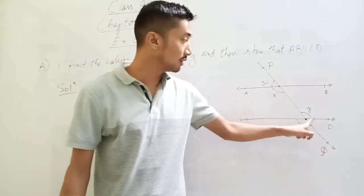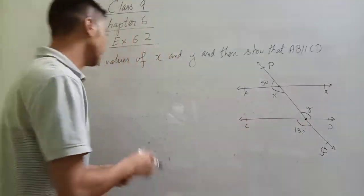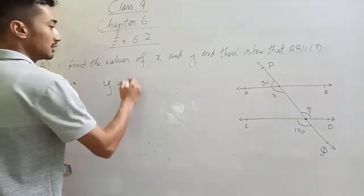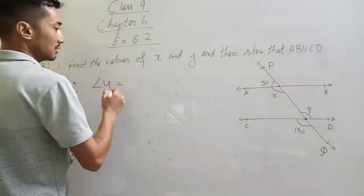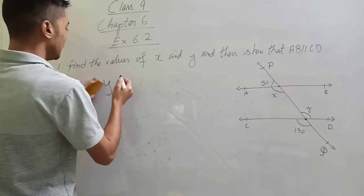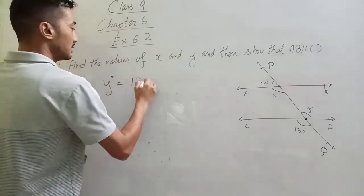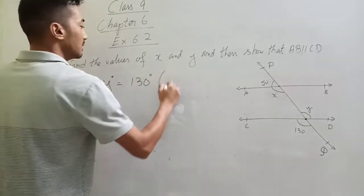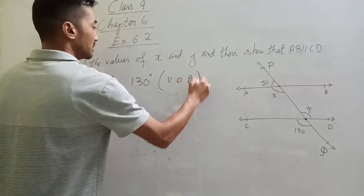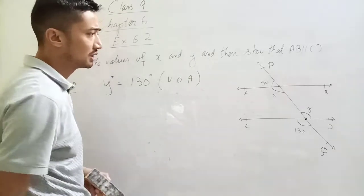We are going to talk about vertically opposite angles. Angle y is equal to 130 degrees — because these are vertically opposite angles. So we write the solution: y equals 130 degrees.